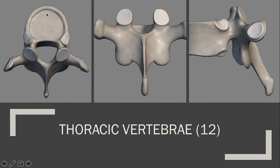There's the costal facet, and this of course being the body in the superior view. This is a posterior view — you can see the lamina here, and the transverse processes, the superior articular facet, and the inferior articular process. You can see those here as well.